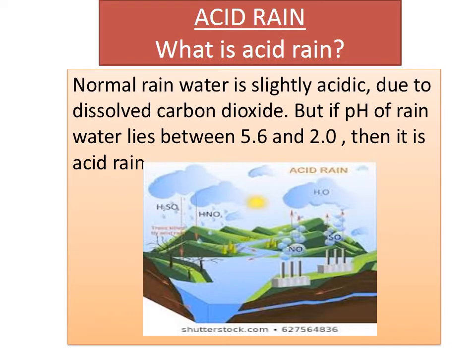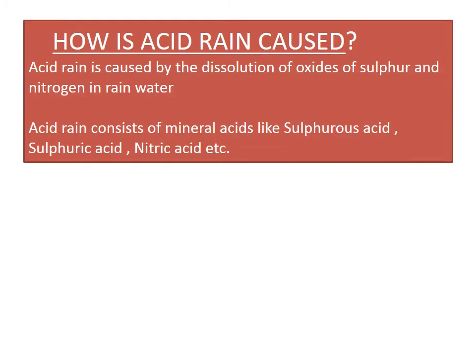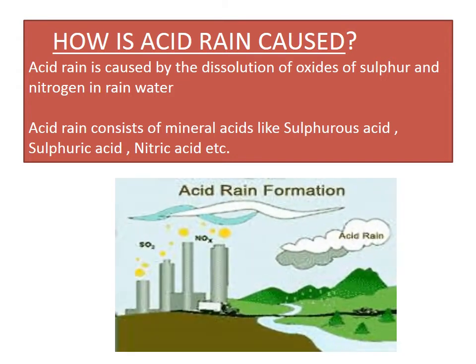Now let us see what acid rain is. Normal rain water is slightly acidic due to dissolved carbon dioxide. But if the pH of rain water lies between 5.6 and 2.0, then it is acid rain. Acid rain is caused by the dissolution of oxides of sulphur and nitrogen in rain water. Acid rain consists of mineral acids like sulphurous acid, sulphuric acid, nitric acid, etc.